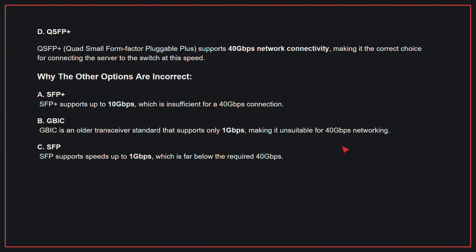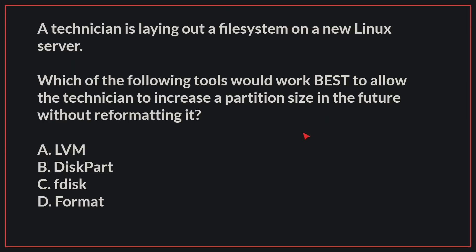B, GBIC: GBIC is an older transceiver standard that supports only 1 GB per second, making it unsuitable for 40 GB per second networking. C, SFP: SFP supports speeds up to 1 GB per second, which is far below the required 40 GB per second. Therefore, the correct answer is D, QSFP+.